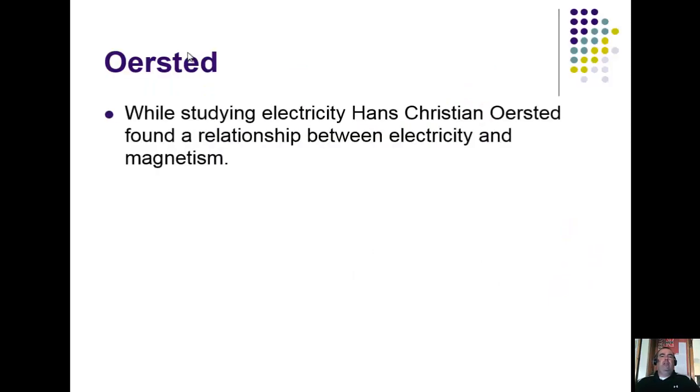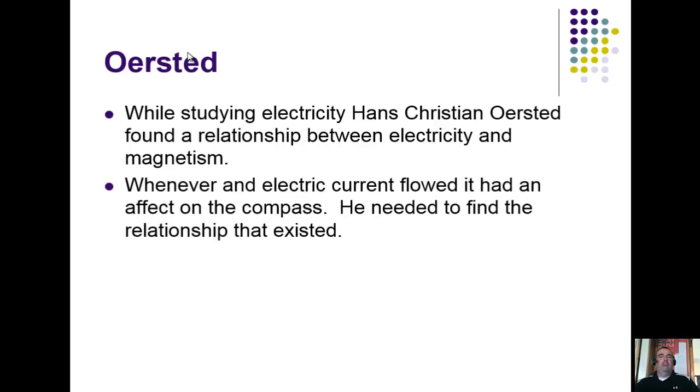When we start talking about electricity, Hans Christian Oersted found a relationship that existed between electricity and magnetism. He found that whenever an electric current flowed, it had an effect on a compass. He needed to find out what relationship existed and why specifically it was affecting magnetism.